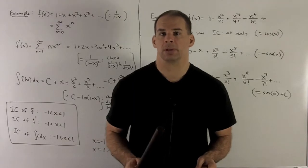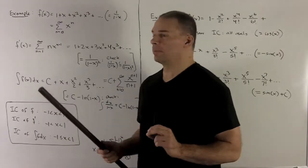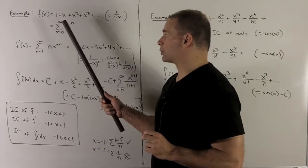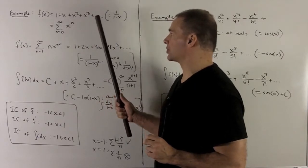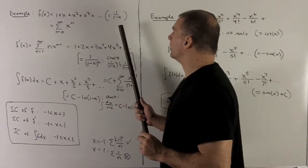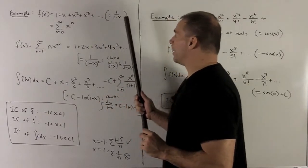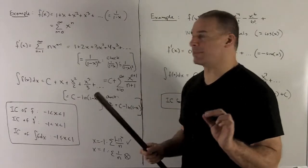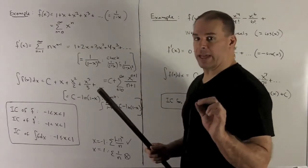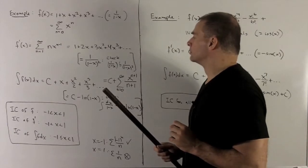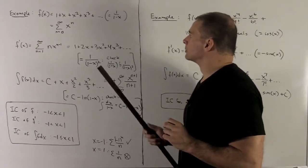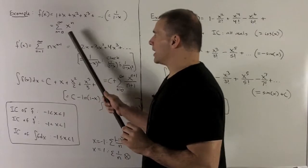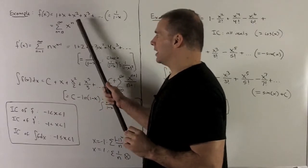A few more examples. Let's start with the geometric power series. f of x equals 1 plus x plus x squared plus x cubed, and so on. That'll be the same as 1 over 1 minus x in some sense — we'll make that clear in the next section. We can also rewrite this as the sum of the sequence element x to the n.